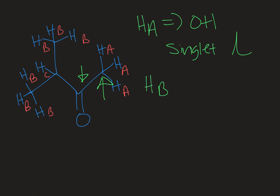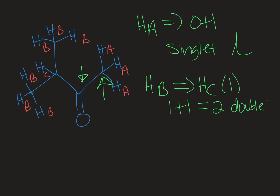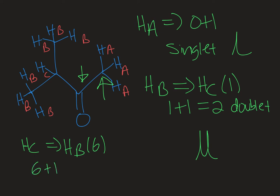HB has six total HBs because those methyls come off the same carbon and are in the same chemical environment due to free rotation about that bond at room temperature. HB has one neighbor, HC, and there's only one HC. So N plus 1 is 1 plus 1 equals 2 — a doublet. HC, on the other hand, has a total of six HB neighbors, so 6 plus 1 equals 7.